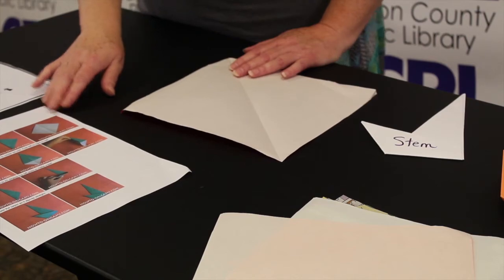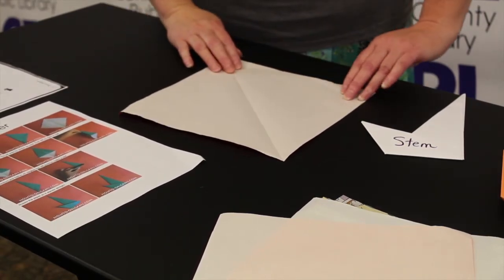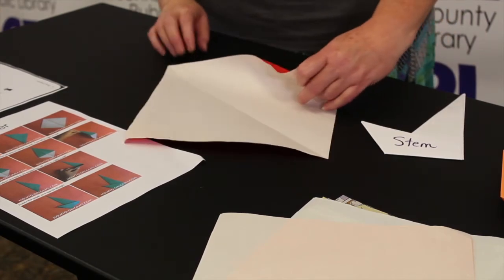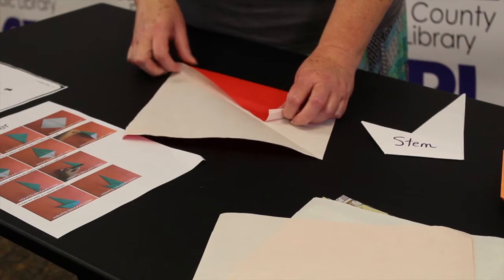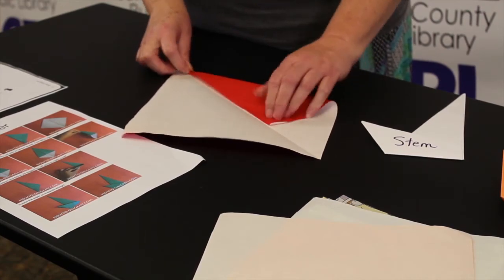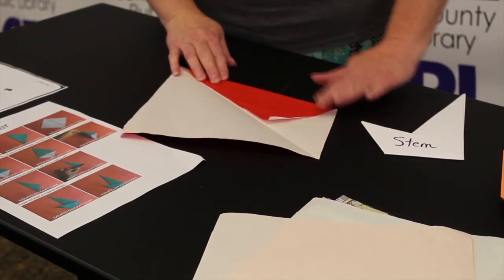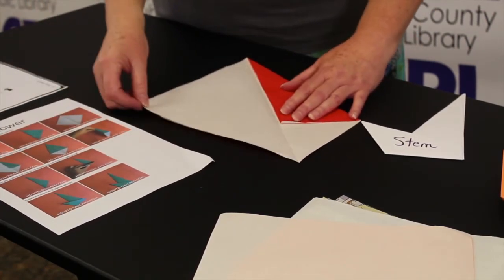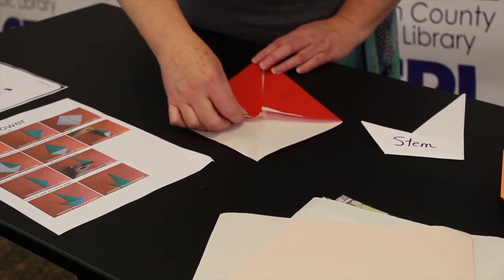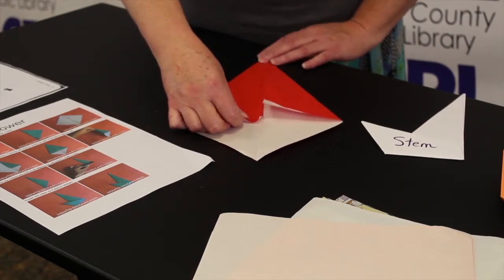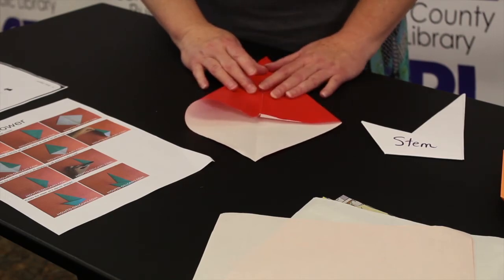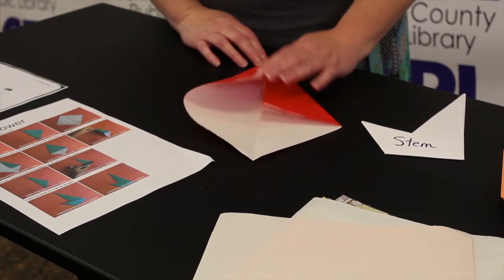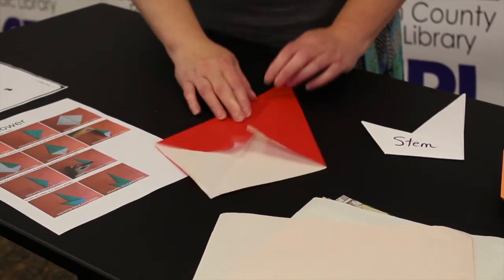Alright, so now we're taking this part of it, this top, this triangle is going to the middle, to our guideline. Down. There we go. Okay. And we're folding this part. It's going to come over here. We're folding it to the guideline. It is just touching the other side. It's not going to overlap it. Creased it. There we go.